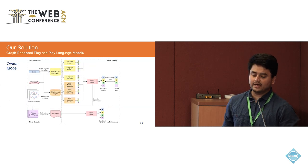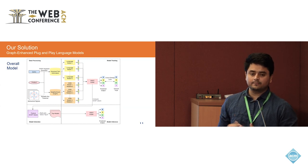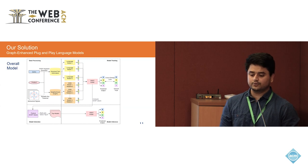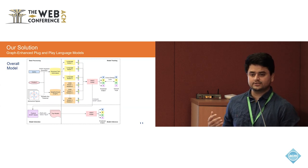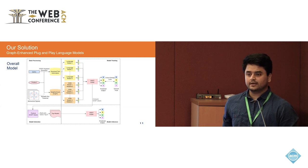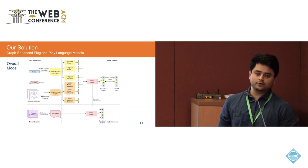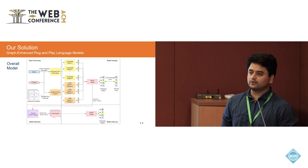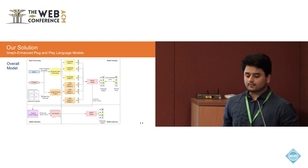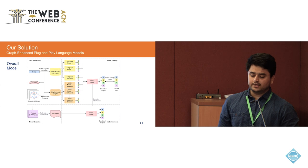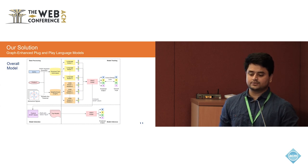Looking at the overall model pipeline: we have a data processing step where we clean text data and create the graph. The model training step is done offline — we train all language models and GNN models on the classification task, and then train the aggregator GBDT model on the logits from the LM and GNN models. Next is a model selection step where we choose the top-K models to deploy in production. Finally, the inference step uses the GBDT model in production.